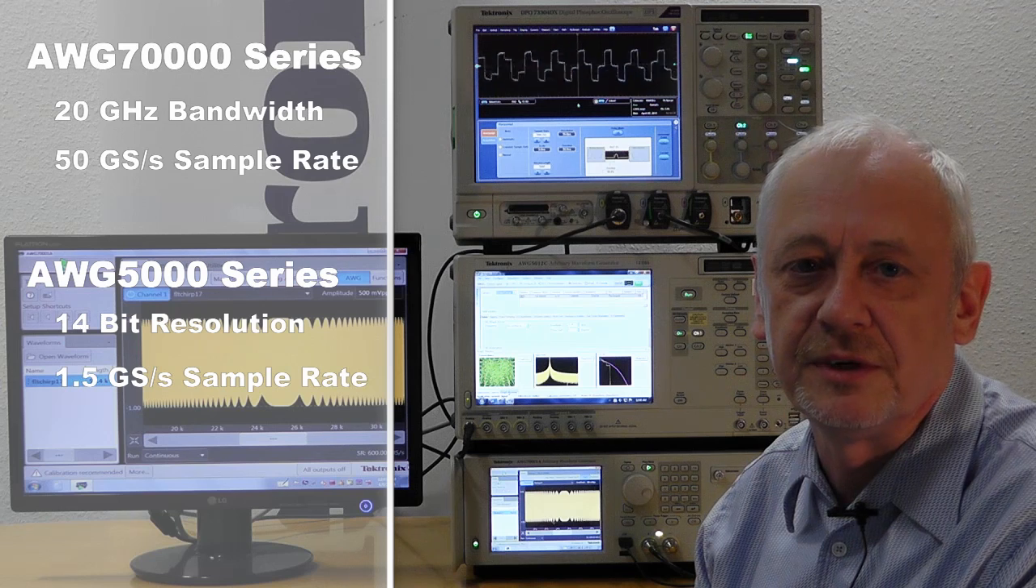For lower performance we also provide AWG 5000 series. This has more vertical resolution of up to 14 bit, up to 4 channels and sample rate up to 1.5 giga samples per second.